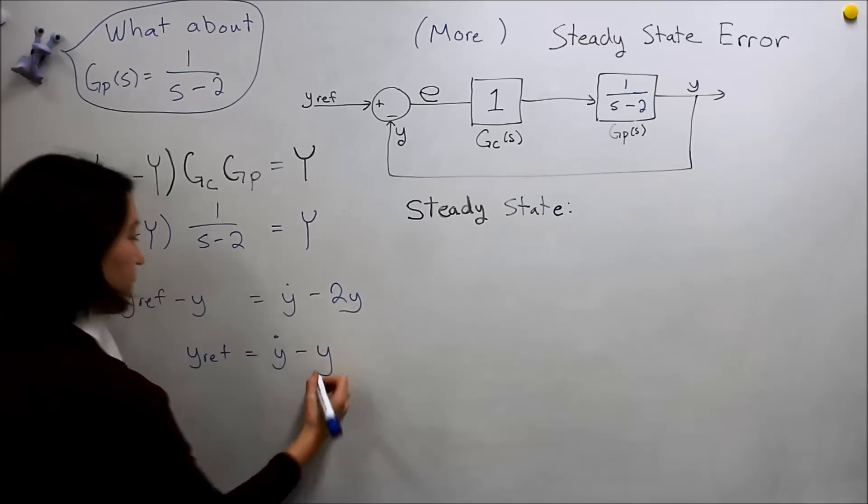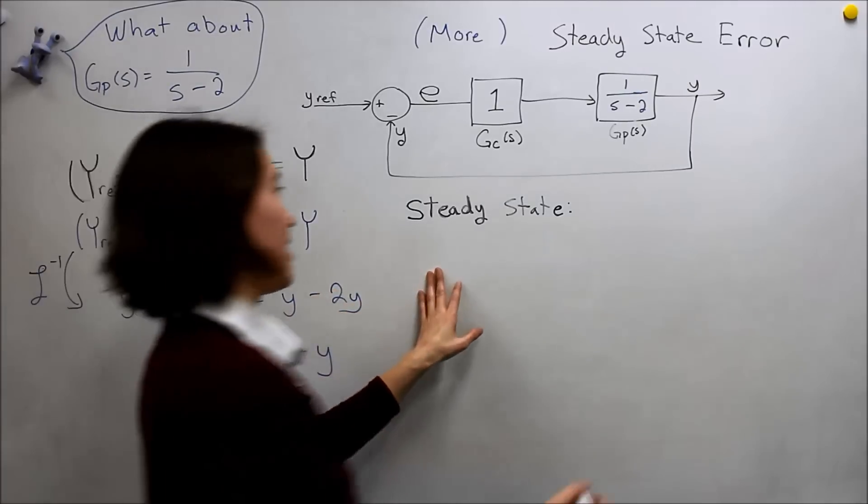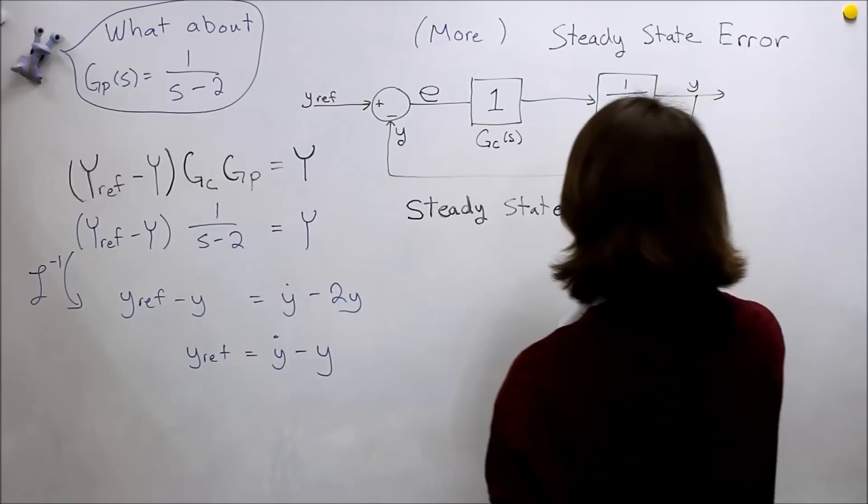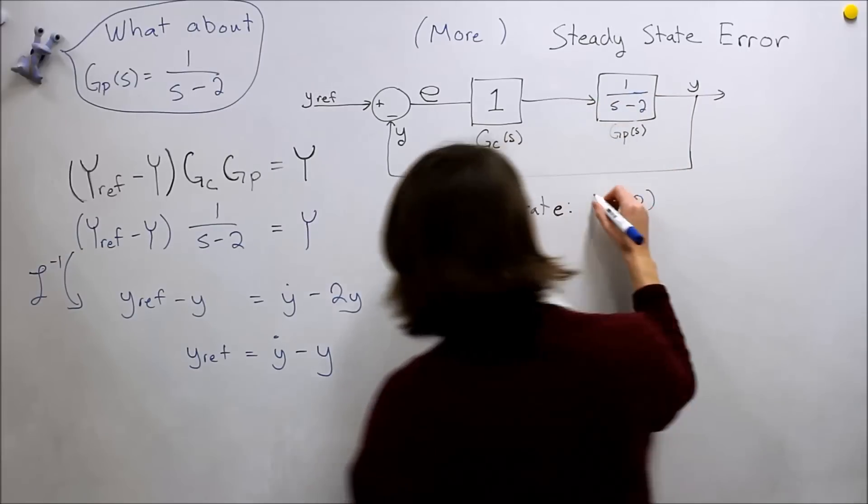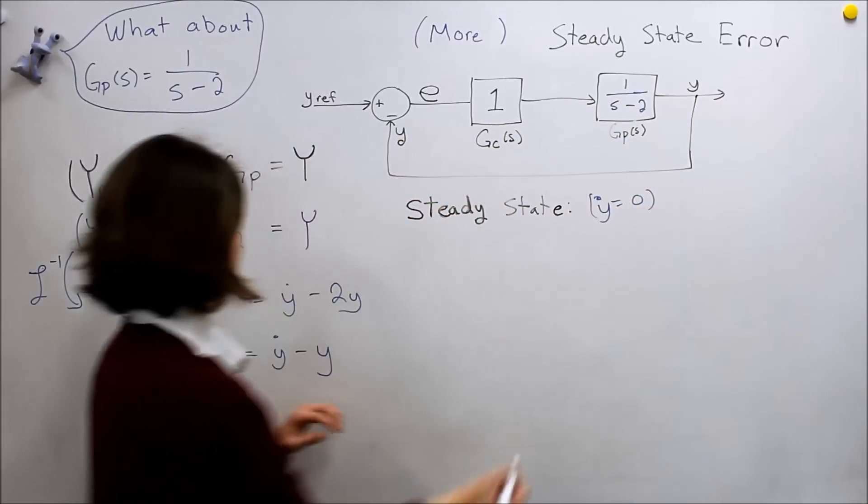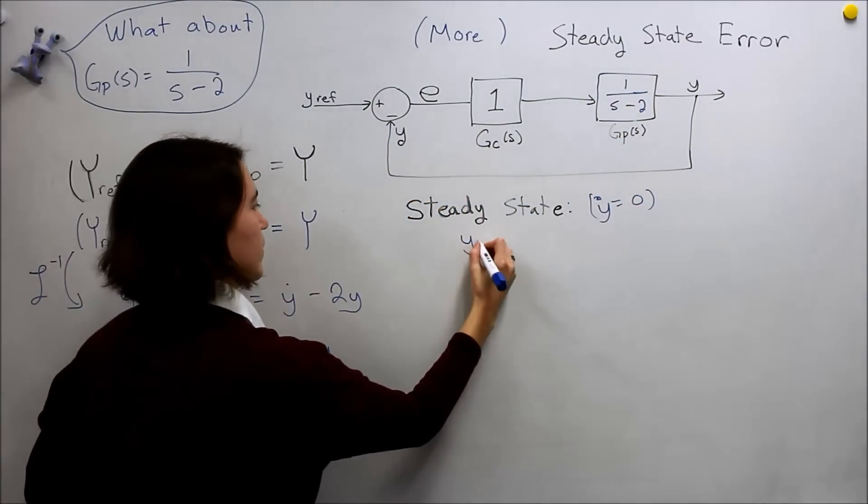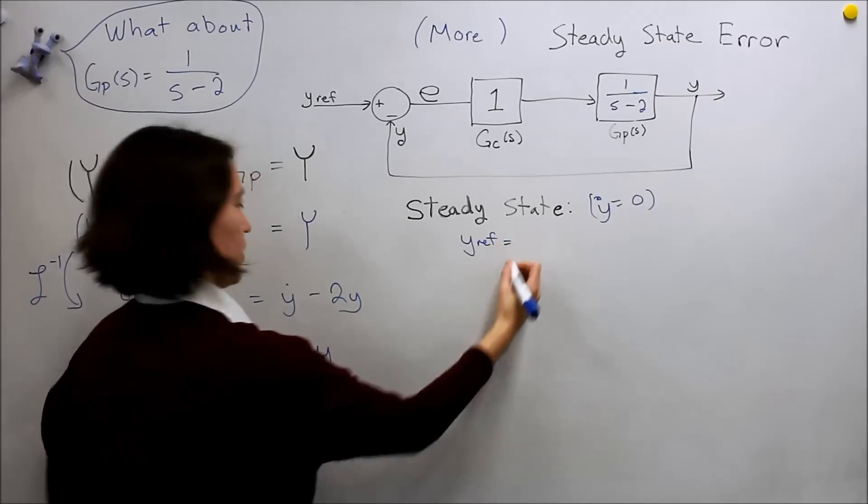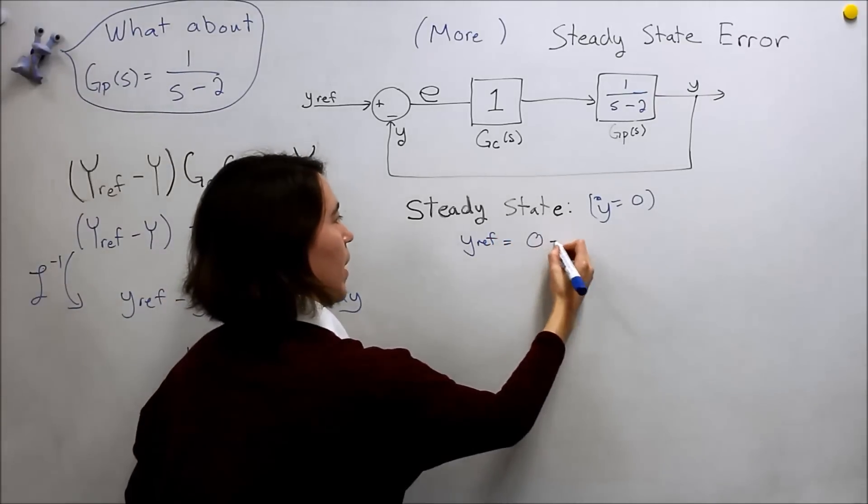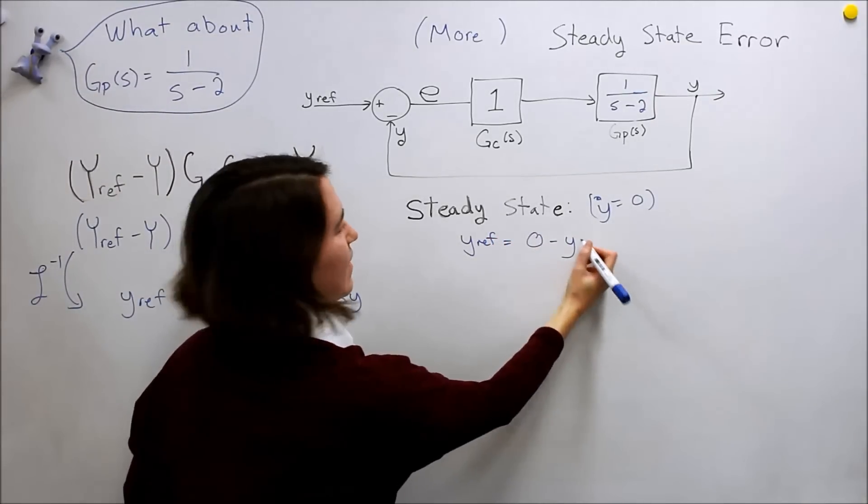If we look at the steady state of this equation, and that's simply where y dot is equal to 0, then we will get y ref is equal to 0 minus y, and this is the steady state value that we're trying to find.